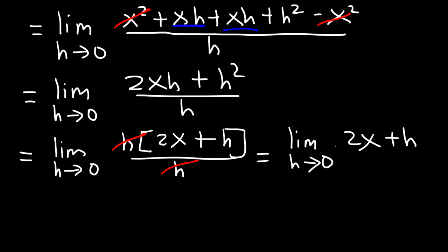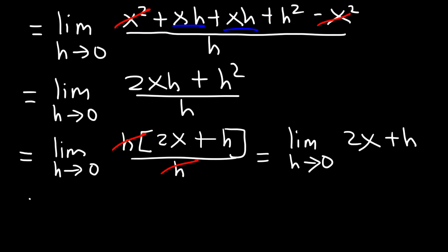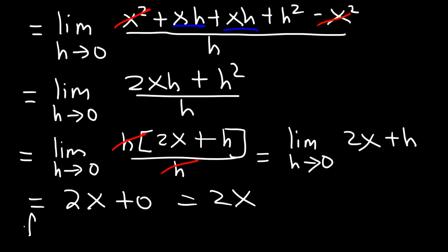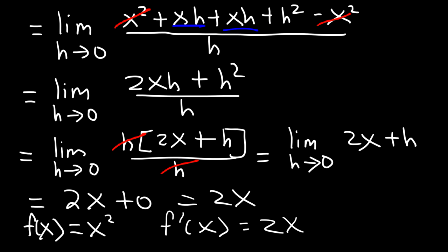Now we're going to apply this limit expression. We're going to replace h with 0. So it's going to be 2x plus 0, which is 2x. So if f of x is equal to x squared, the derivative f prime of x is equal to 2x, based on the definition formula of the derivative. And that's the answer.